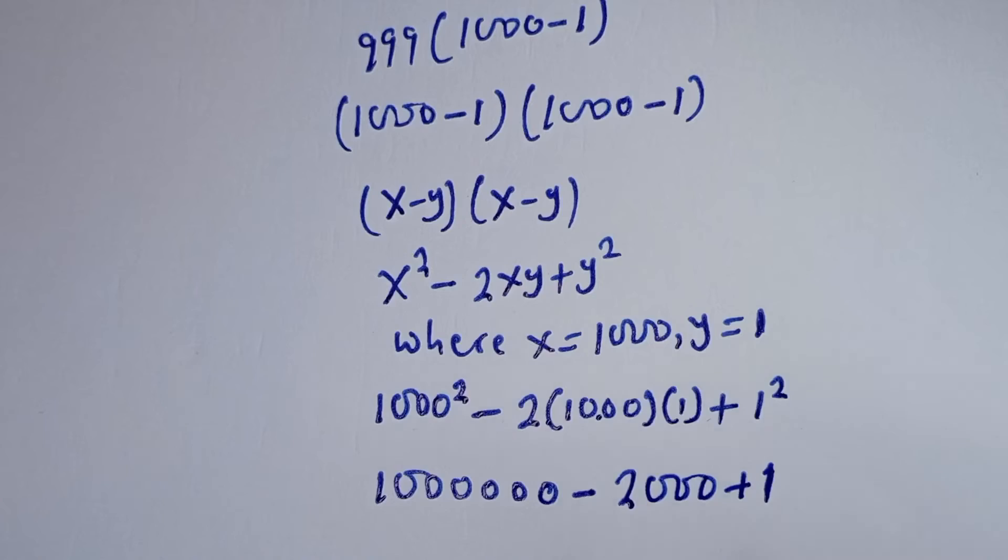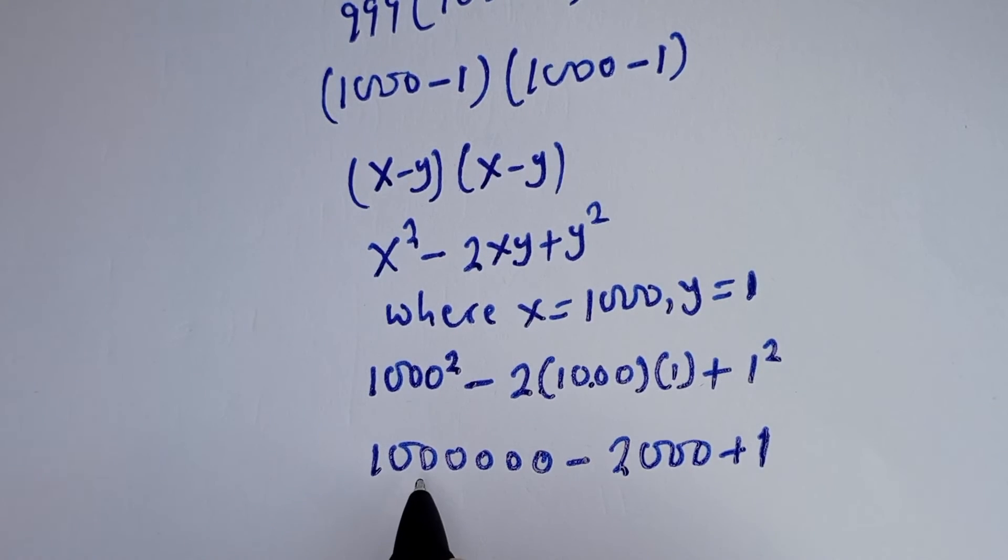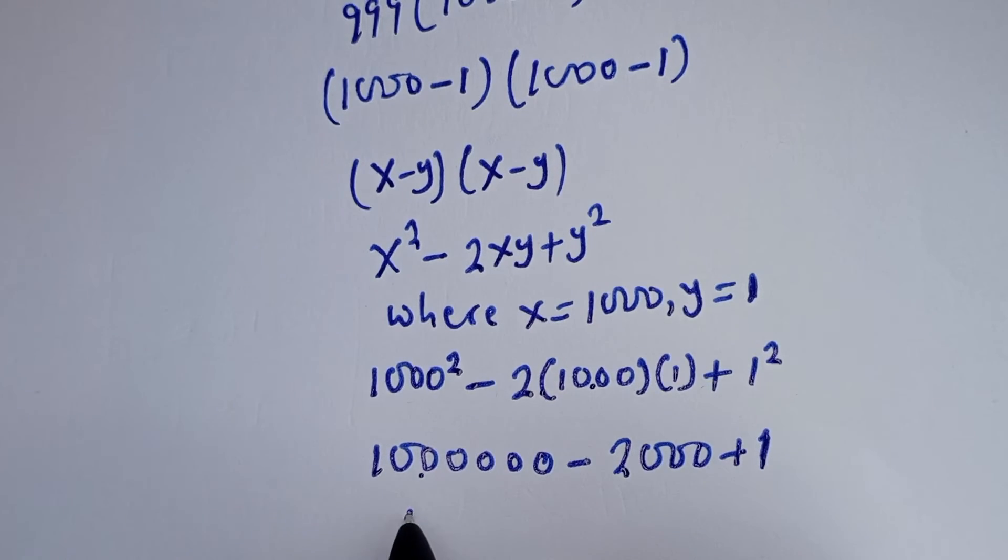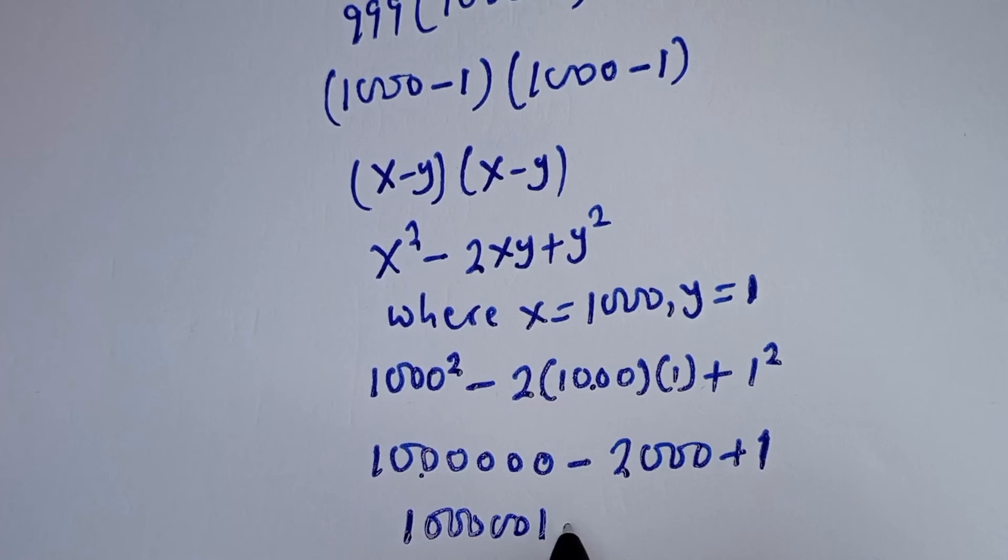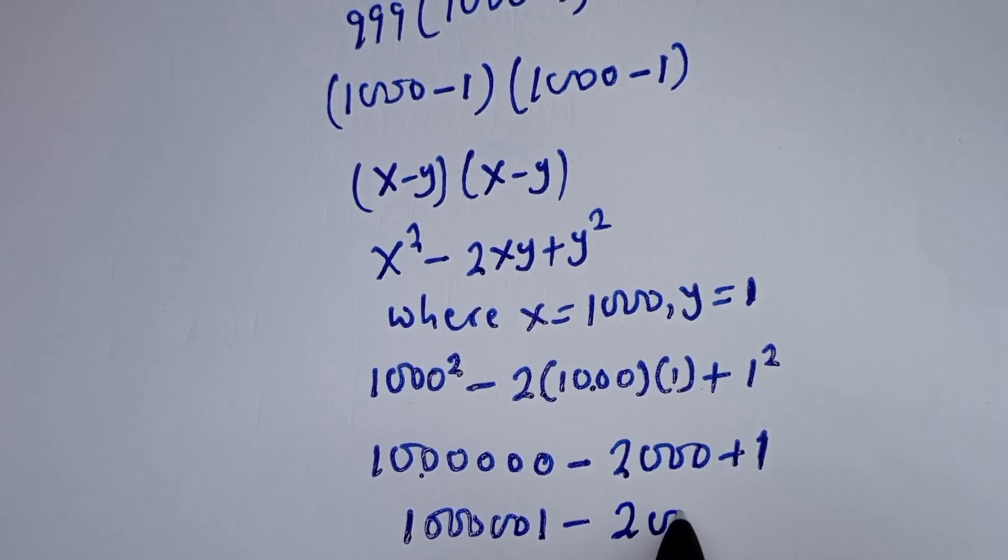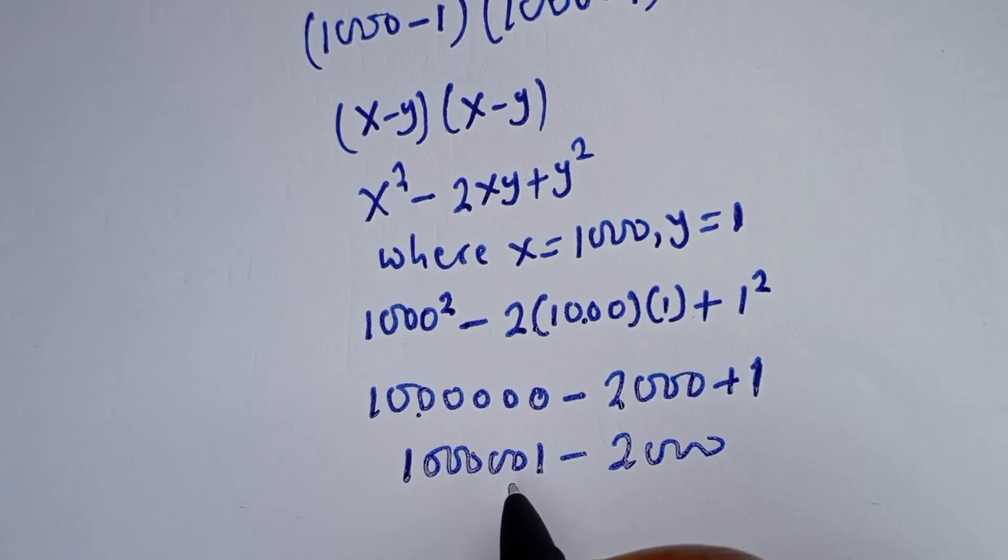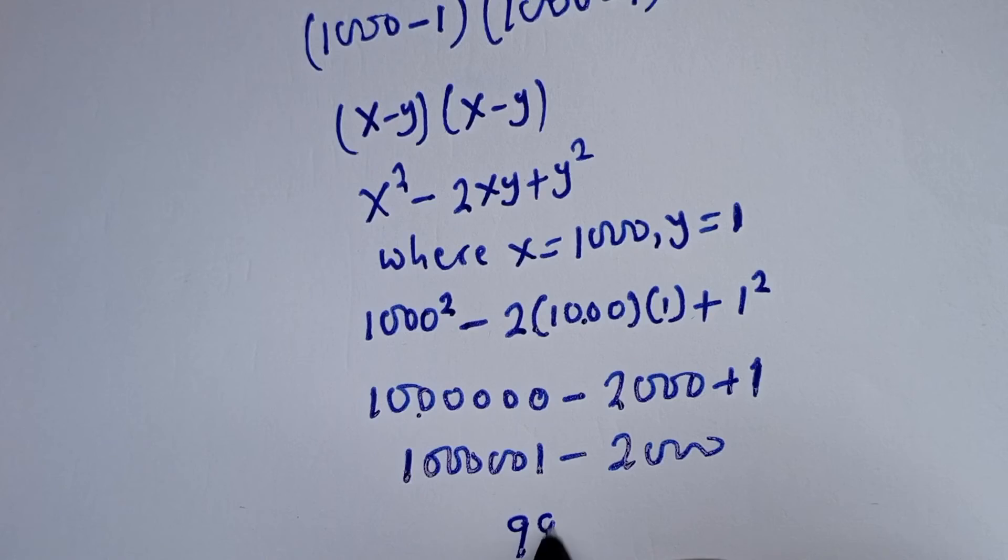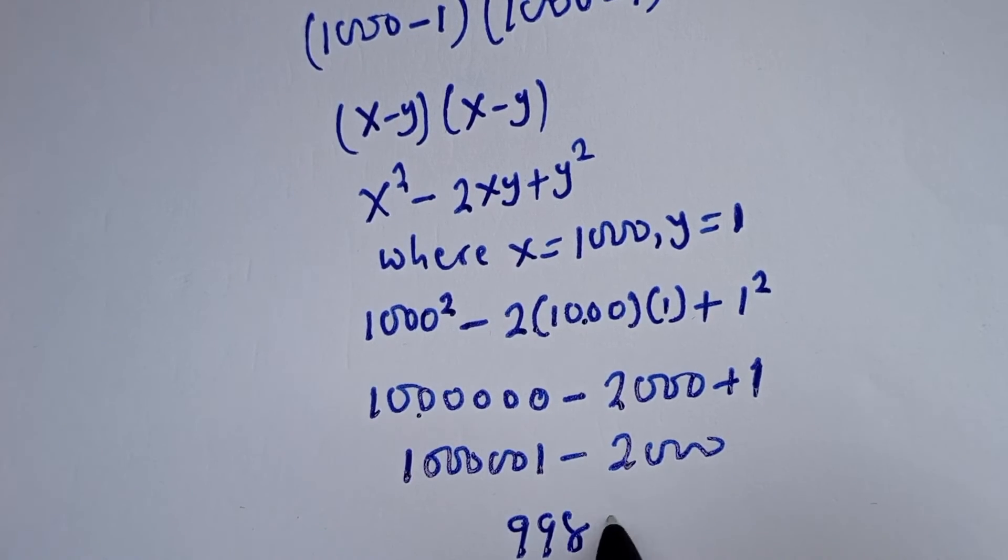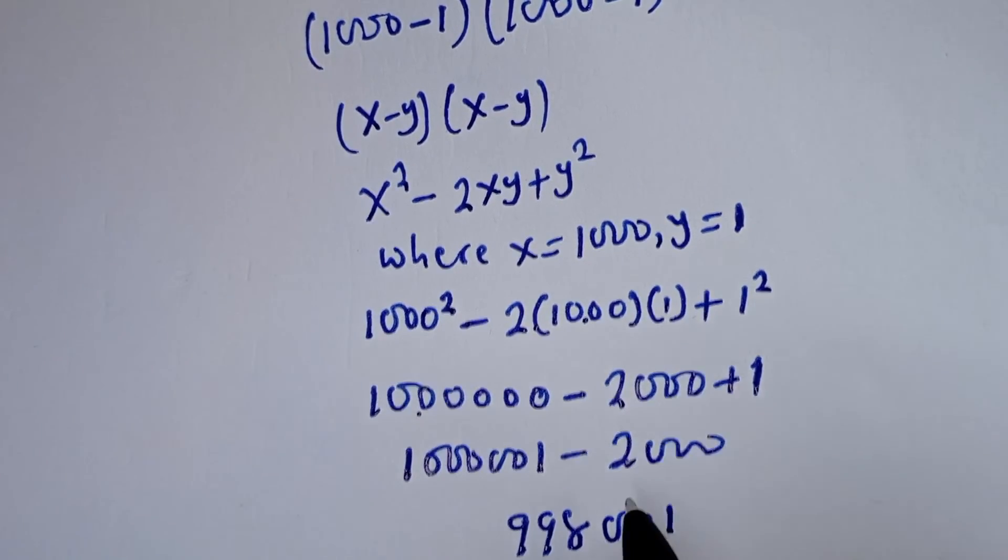Then this is 1000000 minus 2000. Then if you subtract this from this, we have 998001.